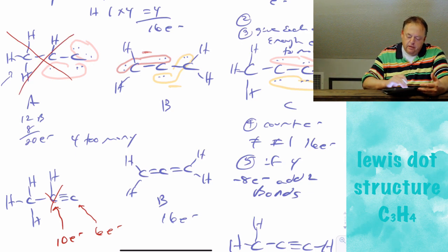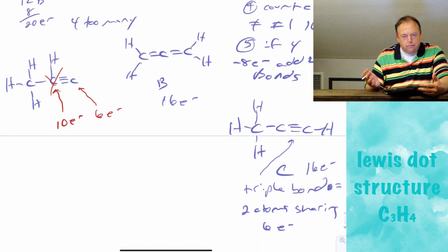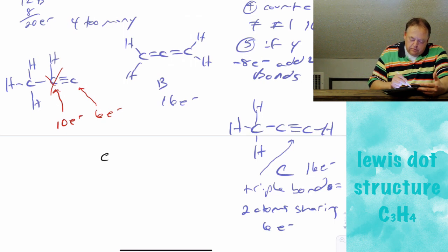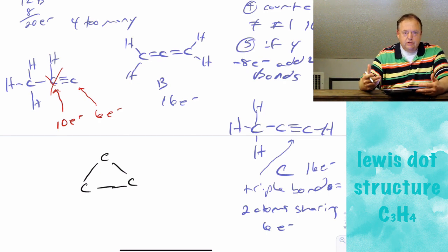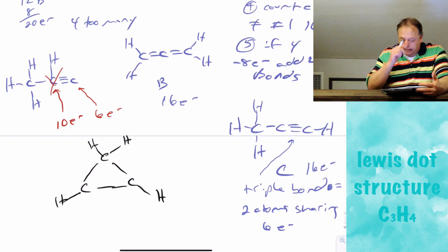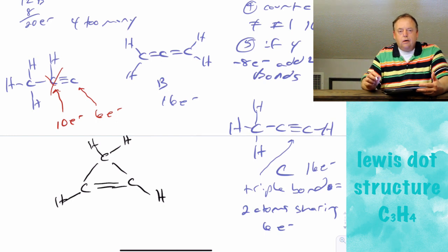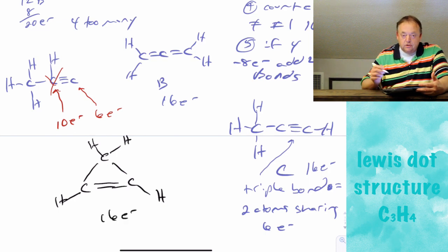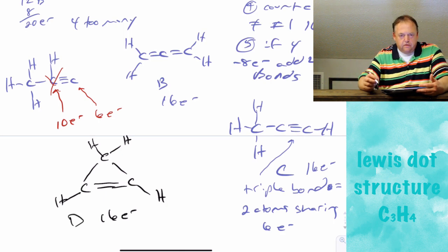Structures B and C both produce valid Lewis dot structures. We could also draw a fourth possibility: molecule D, with 3 carbons in a ring — as you'll see, many molecules exist as ring structures. Placing 2 hydrogens on the top carbon and 1 each on the bottom two carbons, then adding a double bond between 2 of the ring carbons, gives 8 bonds and 16 electrons, with each carbon having an octet. Molecule D is also a perfectly valid structure.